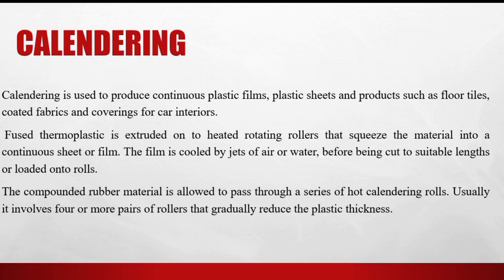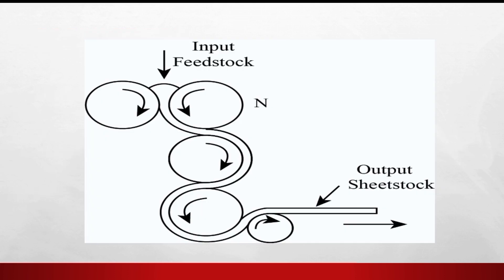We cool it with air or water. The rollers roll the material along the rollers. This is the calendering process. The diagram of calendering shows two or more different rollers, and we have an output of sheet stock at the end.